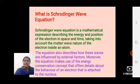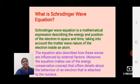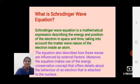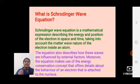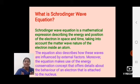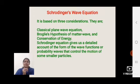What is the Schrödinger wave equation? The Schrödinger wave equation is the mathematical expression which describes the energy and position of the electron in space and time, taking into account the matter wave nature of the electron inside the atom. This equation describes how these waves are influenced by external forces and makes use of the energy conservation concept, which offers detailed behavior of the electron attached to the nucleus.